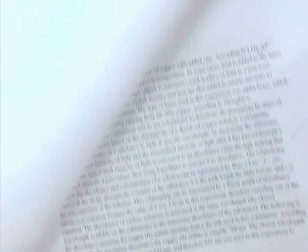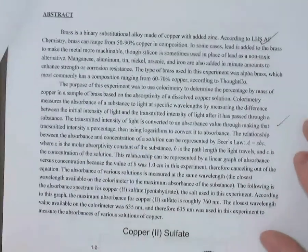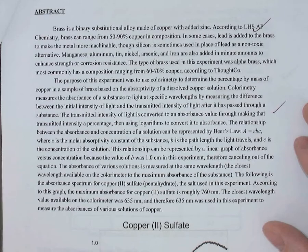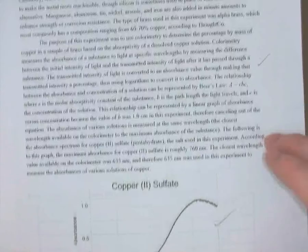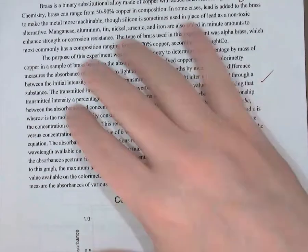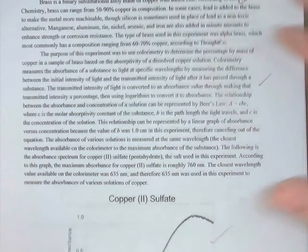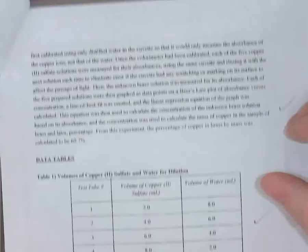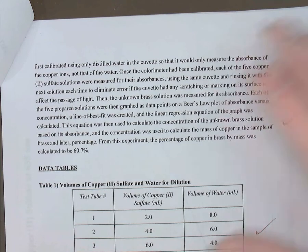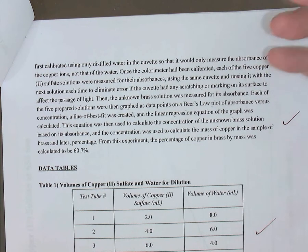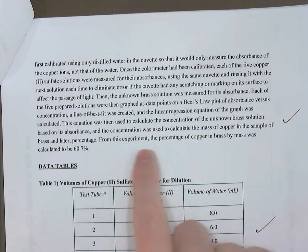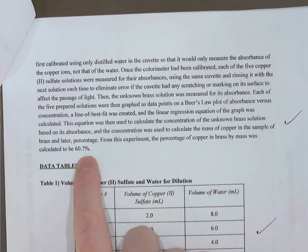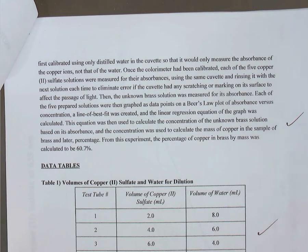Next comes their abstract. In this higher-level course, the abstract is more detailed — they go into greater depth on the background theory. But reading through it, we would still find: a description of the background, the purpose of the experiment, a summary of the procedure (not step-by-step), and finally the results: 'The percent copper in the brass was 60.7%.' If there was a class set of results, they would include the class average there as well.